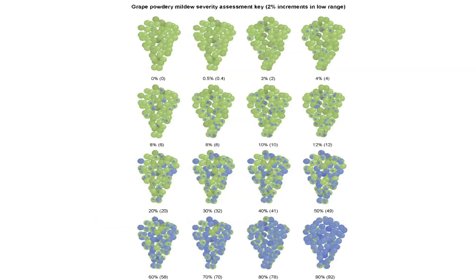Regular monitoring of the incidence of powdery mildew in vineyards can provide useful information on disease presence and levels, which is useful for decisions about spray timing and fungicide selection. The risk of severe powdery mildew development is lower in open vine canopies with higher airflow and exposure to UV light compared to dense shaded canopies.